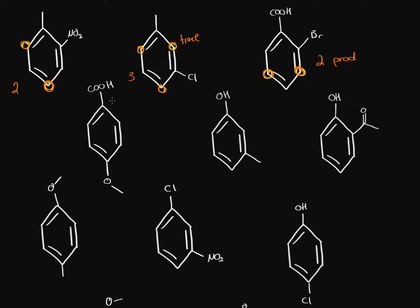On this next one, we have a carboxyl group and an ether. The carboxyl group directs to the meta positions and the ether directs to the ortho and para positions. The para position is blocked, so the only positions available are the ortho for the ether and the meta for the carboxyl. We'll have up to two products.